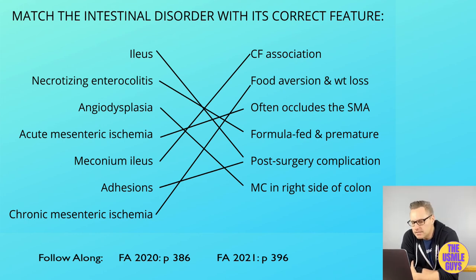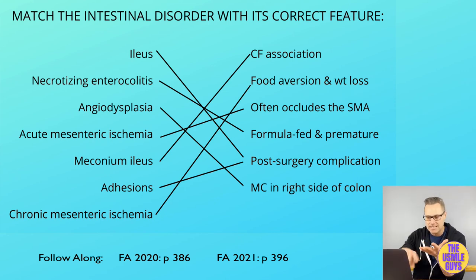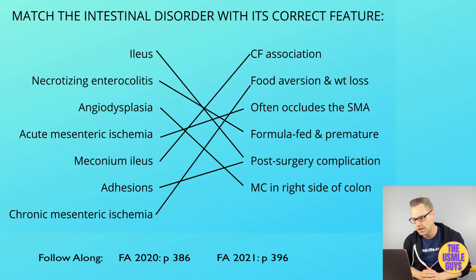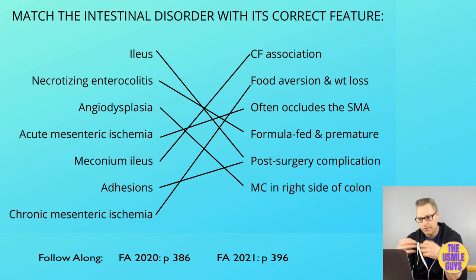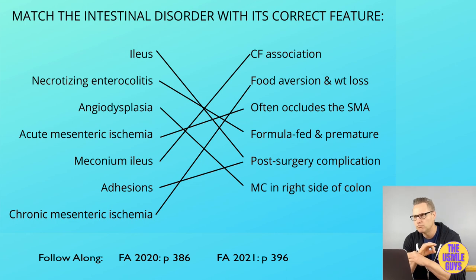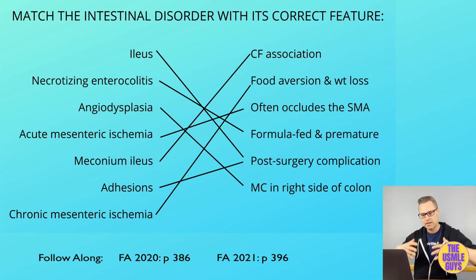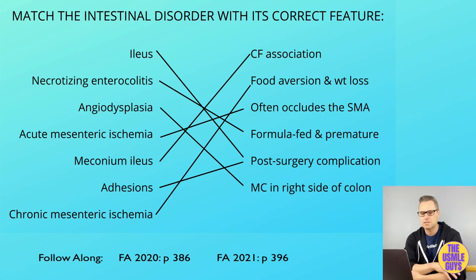Chronic mesenteric ischemia is caused by atherosclerosis in major arteries such as the celiac, SMA, or IMA. Occlusion affects a large GI area and presents with postprandial epigastric pain due to hypoperfusion. The pain causes patients to avoid eating, leading to weight loss — which may mimic cancer and should be kept in the differential.